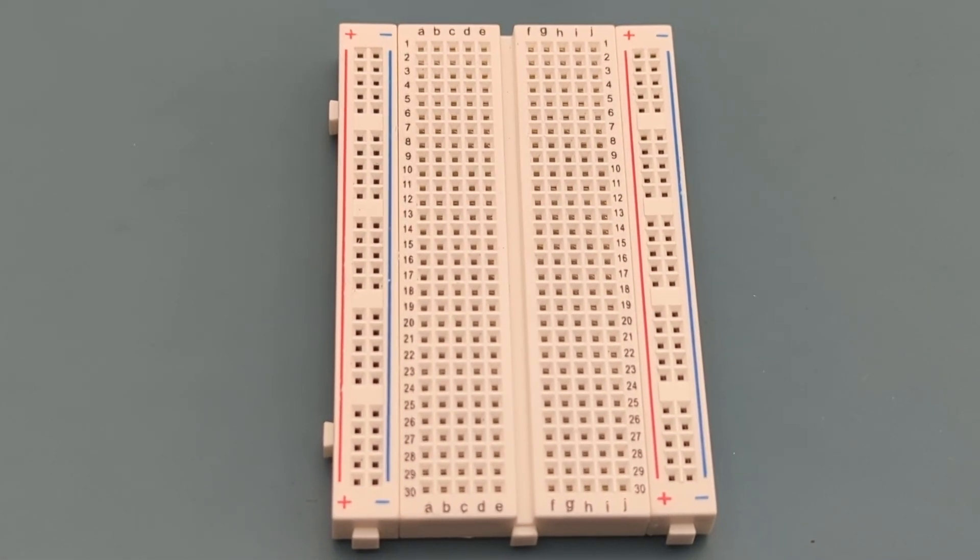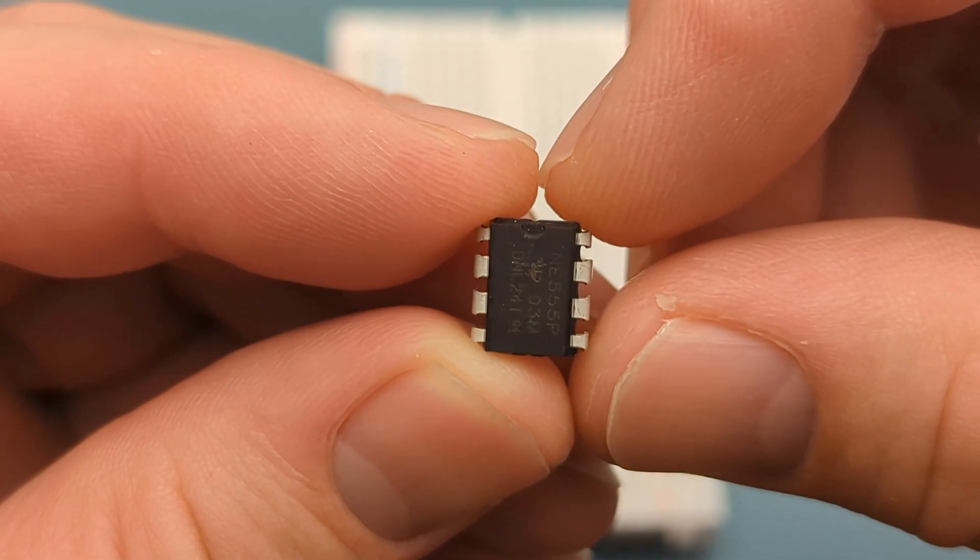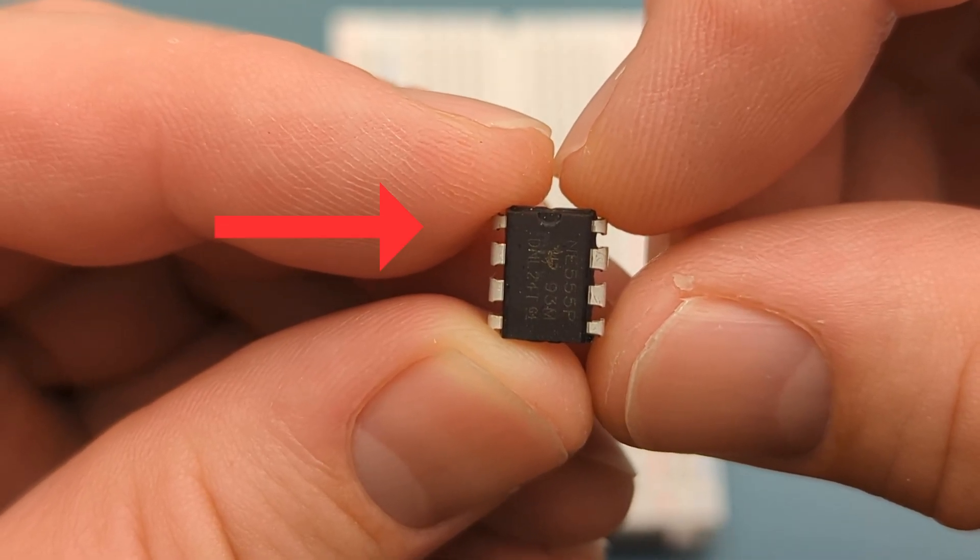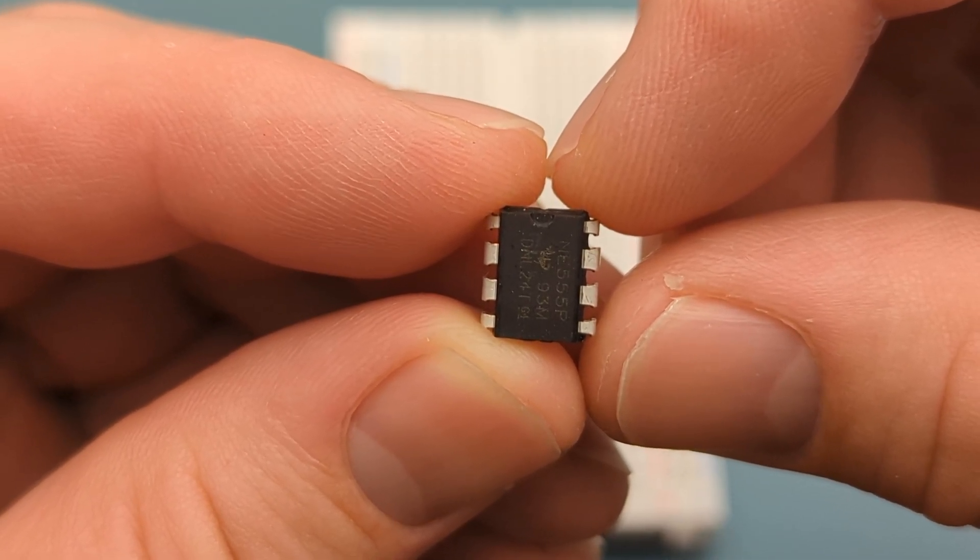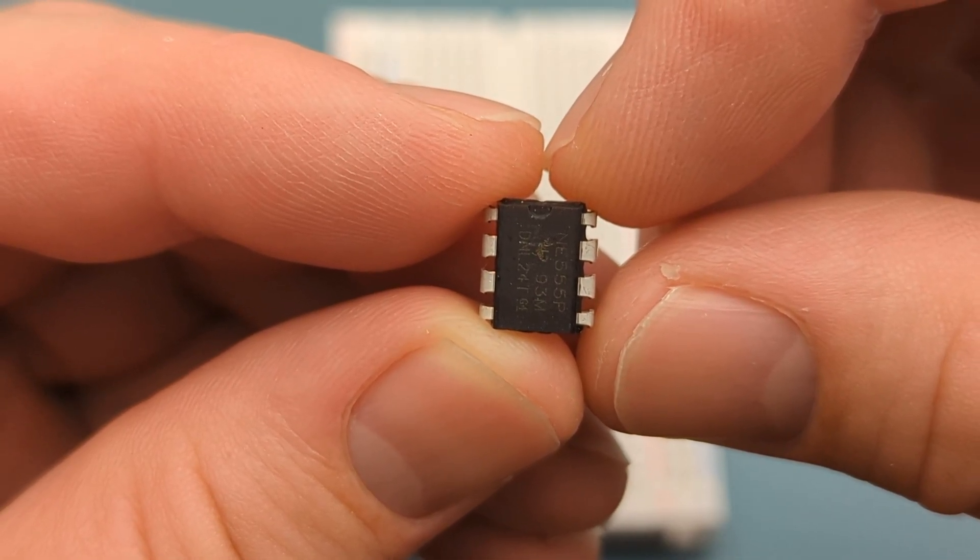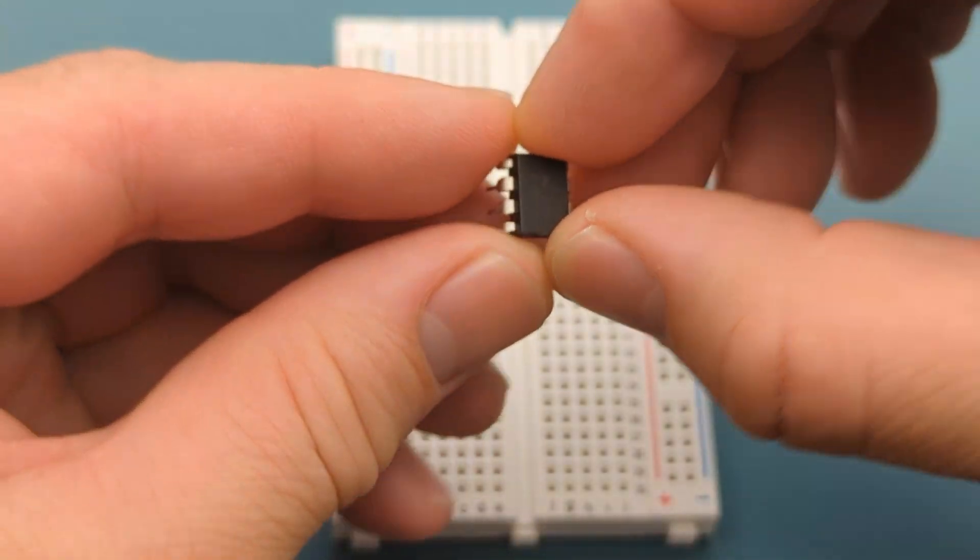Let's set up the circuit step-by-step. Start by placing the 555 timer IC onto the breadboard. Remember, the pins are numbered counterclockwise, starting from the top left. Refer to the later circuit diagram if you have questions about the circuit connections. Insert the 555 timer IC in the middle of the breadboard.